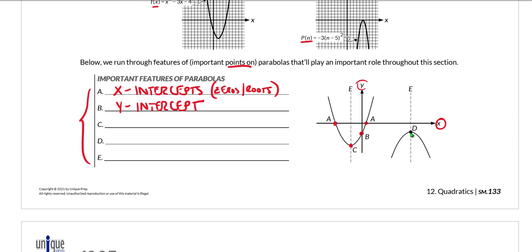Points C and D are both what are called vertices or singular vertex. Each of those is a vertex. However, point C, we're going to go ahead and write down vertex, but in parentheses we're going to write minimum.